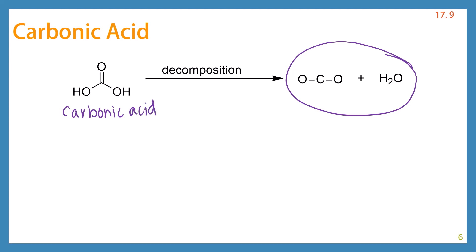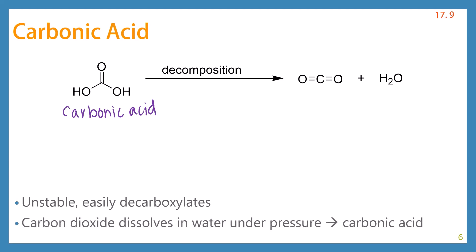But when it's not under pressure, carbonic acid actually isn't very stable, and it will decompose into its two components, carbon dioxide and water. The process of losing an equivalent of carbon dioxide is called decarboxylation, and we're actually going to see a lot of that in our next video.